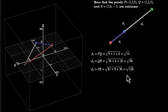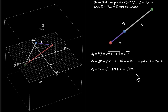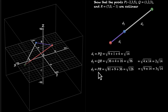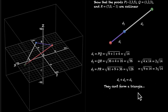Now at first glance these look different, but √56 = √(4 × 14) = 2√14, and √126 = √(9 × 14) = 3√14. Now we can see that d1 + d2 = √14 + 2√14 = 3√14 = d3. We have mathematically proved that adding two of the lengths gives exactly the third length, which means they cannot form a triangle, which means they must be collinear.